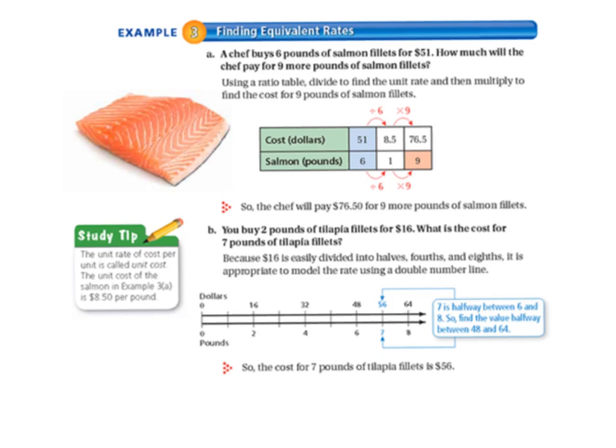Example 3, we're finding equivalent rates. Letter A, a chef buys 6 pounds of salmon fillets for $51. How much will the chef pay for 9 more pounds of salmon fillets? So using a ratio table, we divide to find the unit rate, and then we multiply to find the cost for 9 pounds of salmon fillets. So we're actually doing both of the problems that we've learned how to do. So we find a unit rate, and we're also finding equivalent rates.